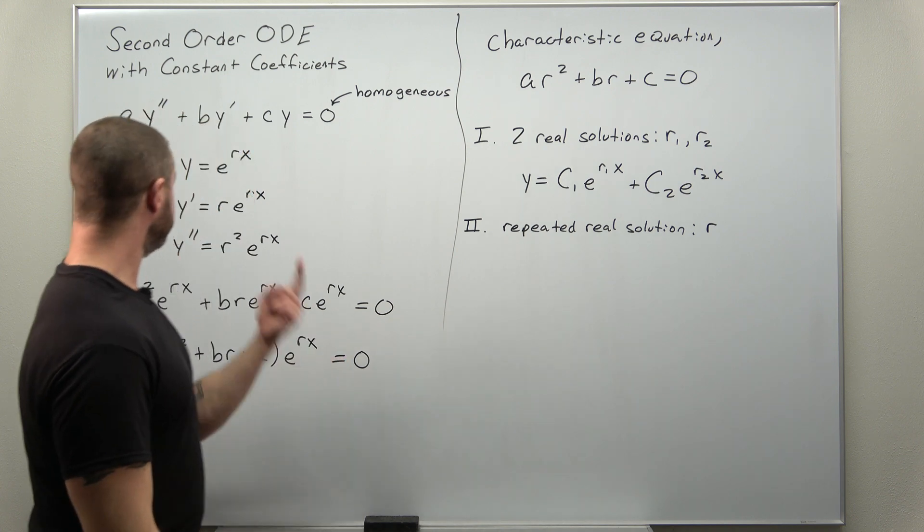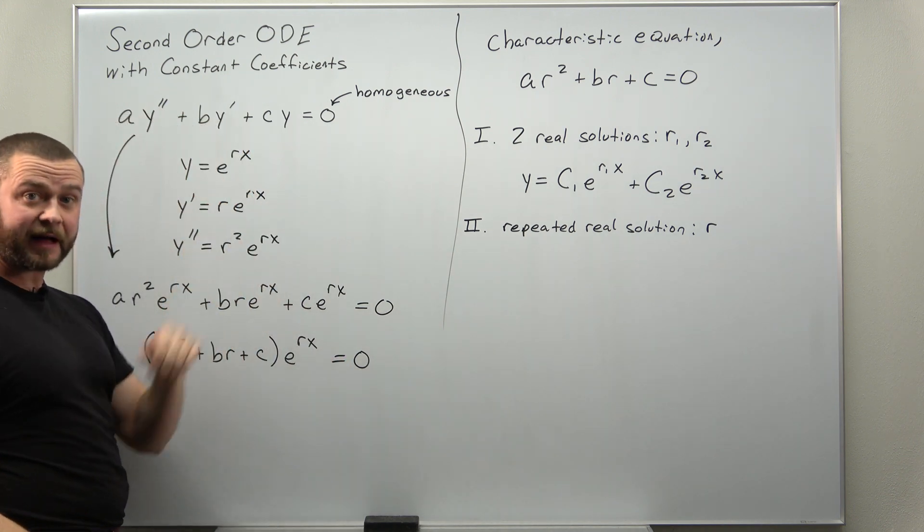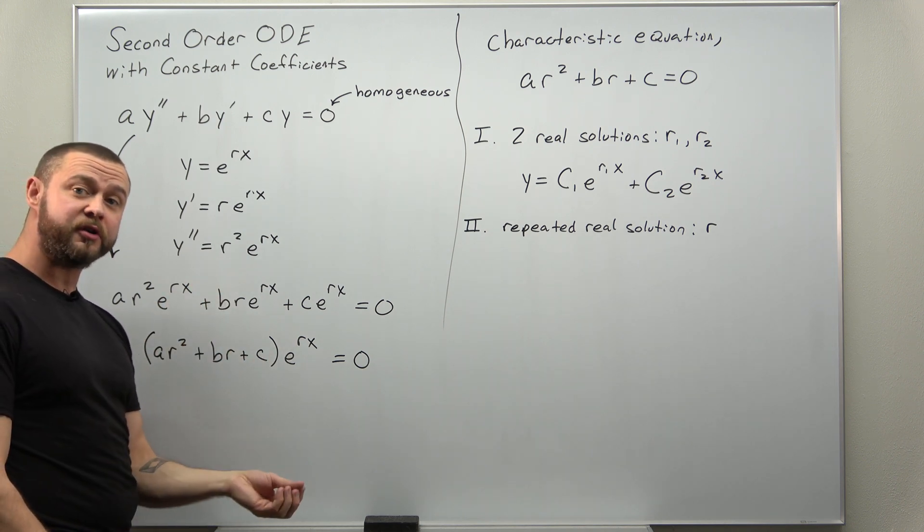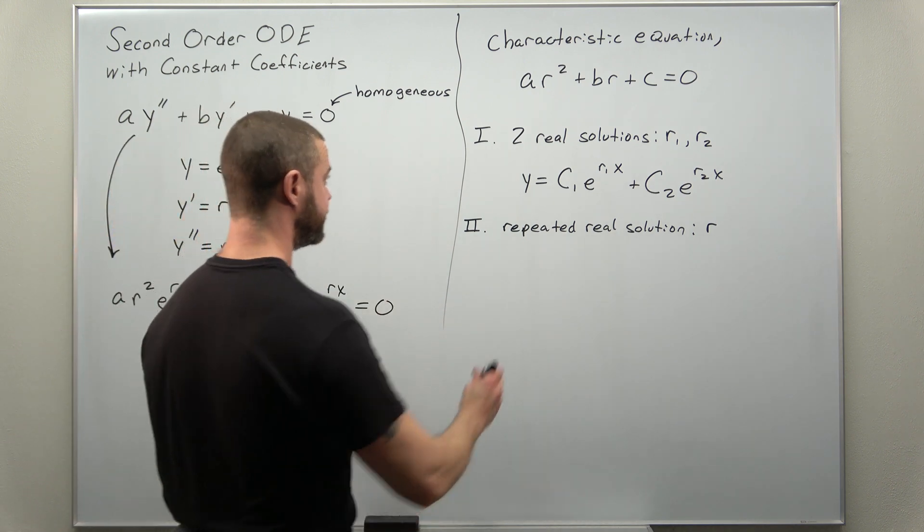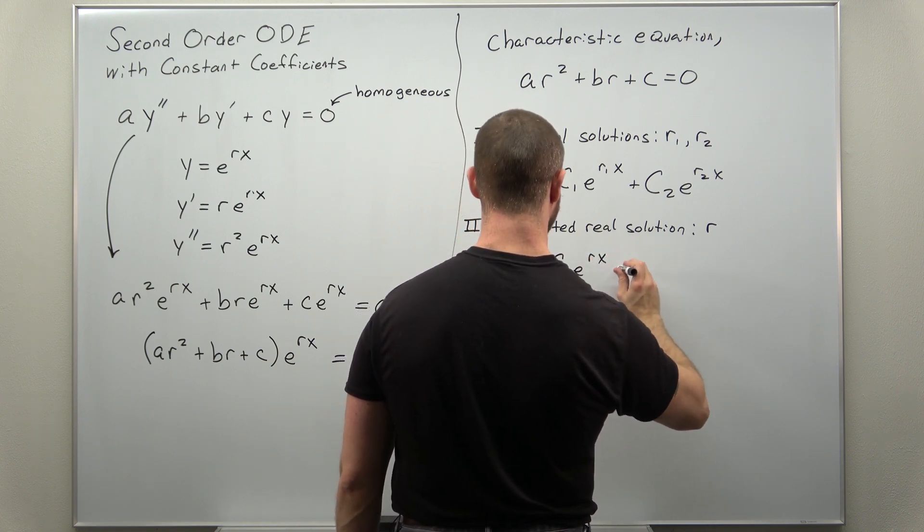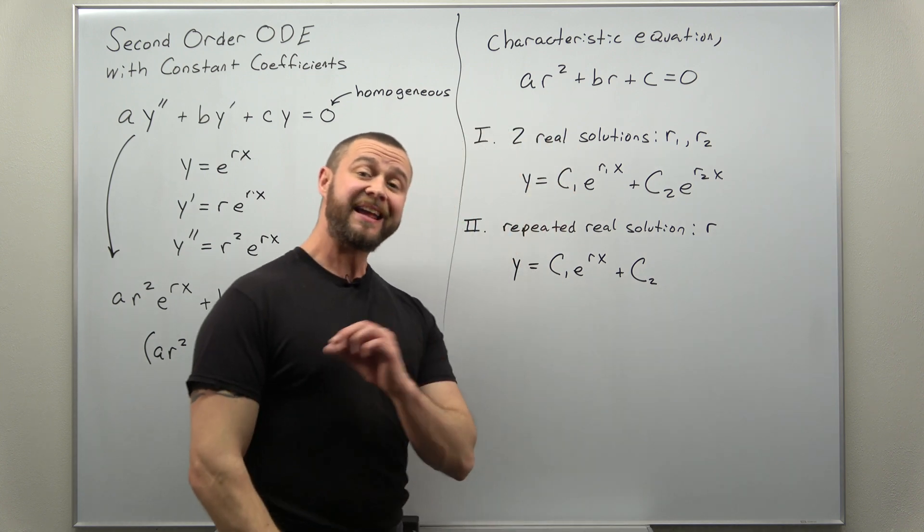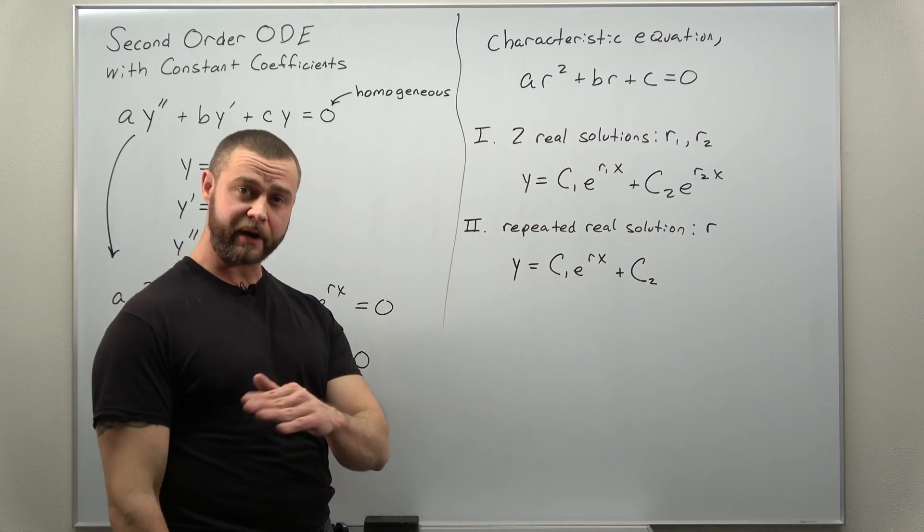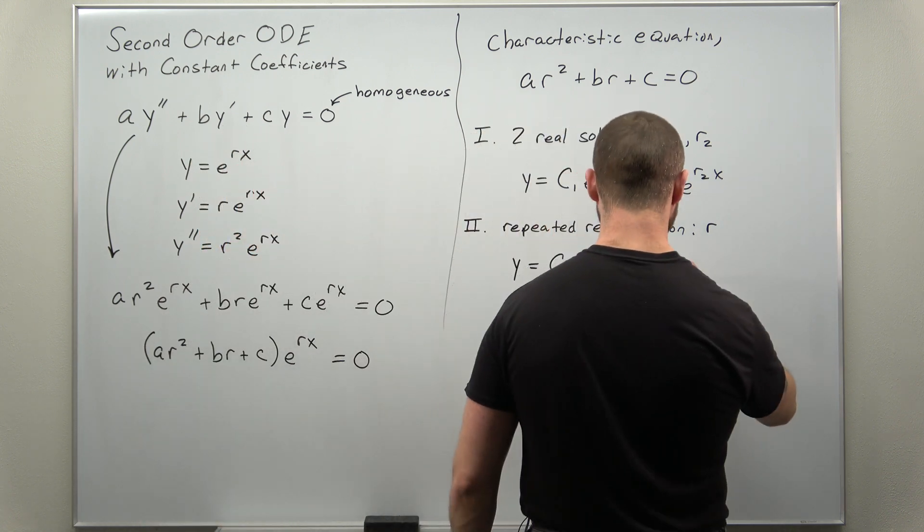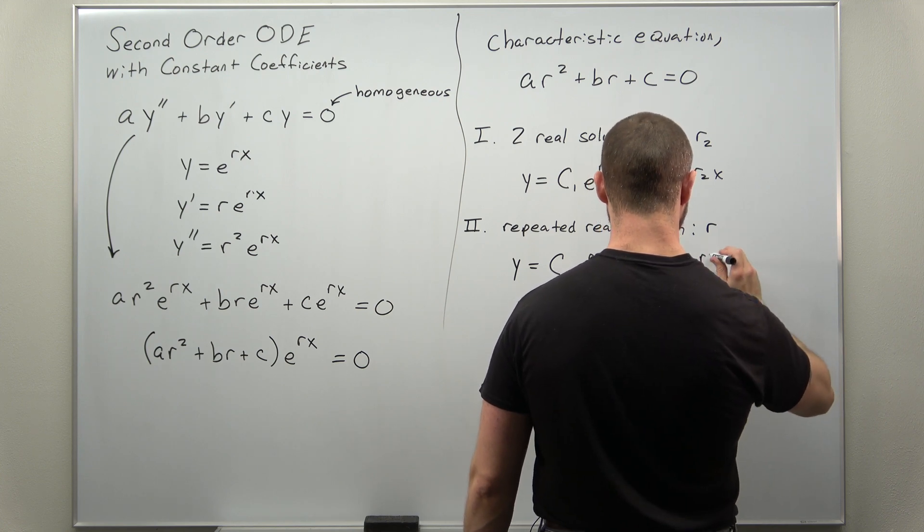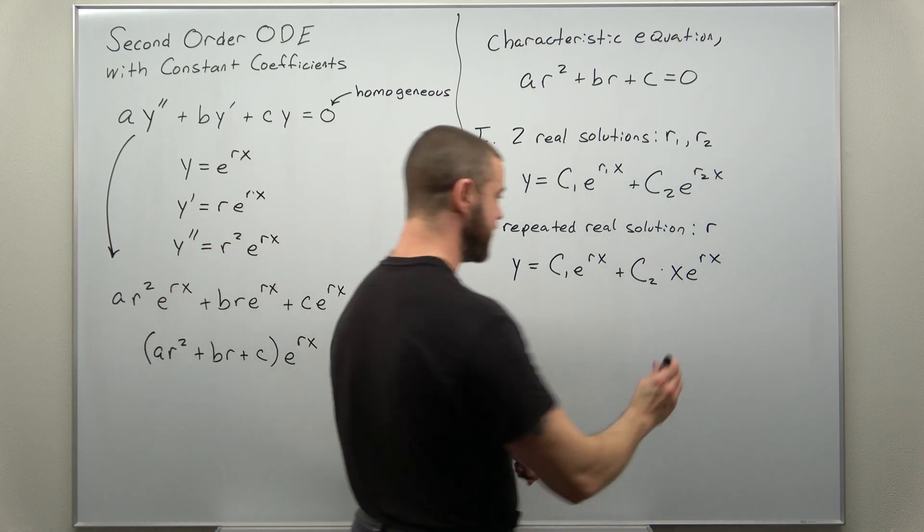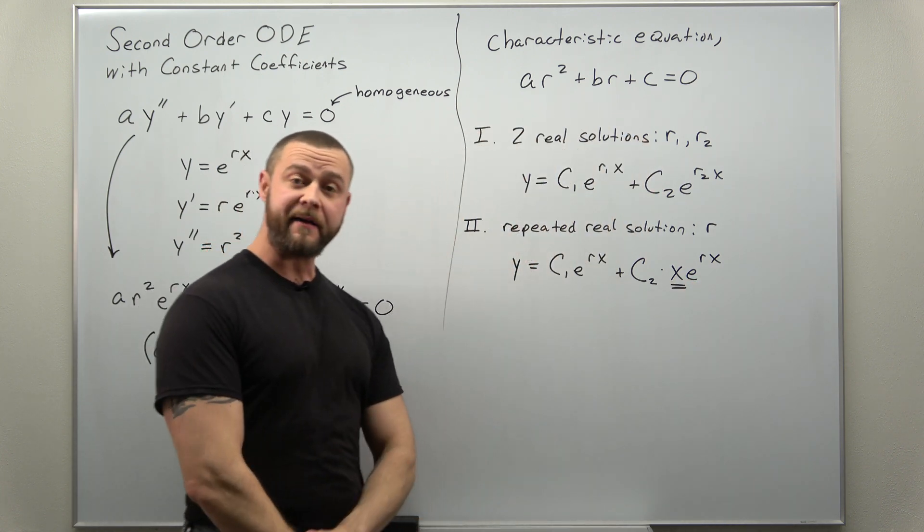In this case you do get an exponential function e to the rx for that value of r. But there's another solution that we're going to find with a method called reduction of order in another video. So your solution here, you do get your exponential function e to the rx, but your second linearly independent solution, what you might call y2, is your exponential function multiplied by a factor of x.